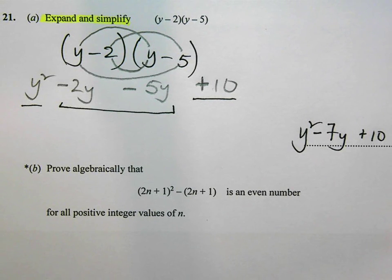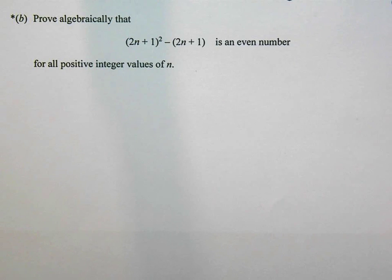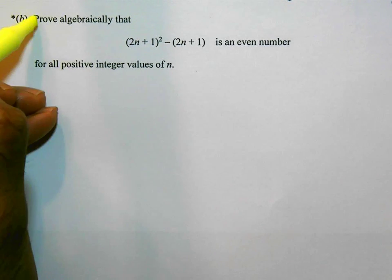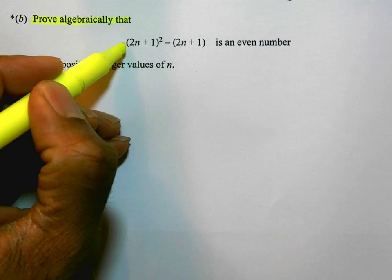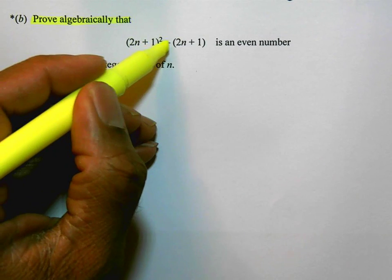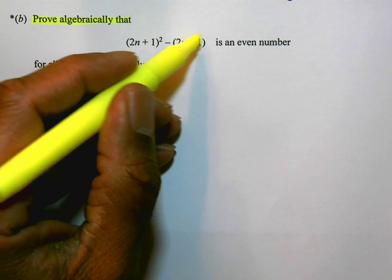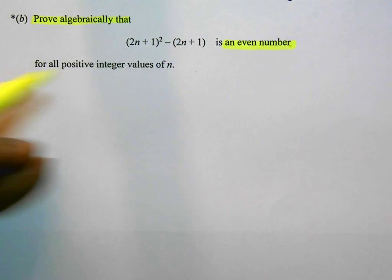In part b, the question says prove algebraically that (2n+1)² - (2n+1) is an even number for all positive integer values of n.